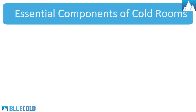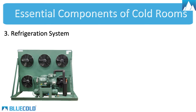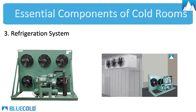3. Refrigeration system. It is an outdoor unit of a cold room, commonly called a condensing unit, which is used to supply compressed refrigerant to the evaporator coils.